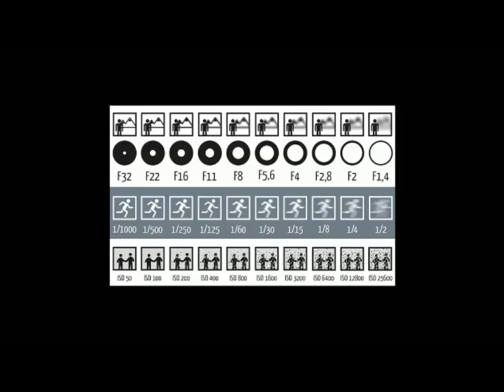The bottom row represents ISO. The ISO determines how sensitive the camera is to light, but it also determines the texture or graininess of the image. Shooting at a low ISO gives you a nice fine texture, but you're not very sensitive to light. In dim light, if you raise ISO, it makes the camera more sensitive but it also makes your photos more grainy. That's how all three things work and they're all tied together.